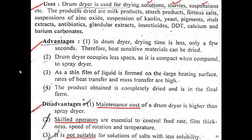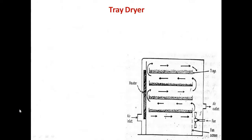Advantages of the drum dryer: time consumption is very less; it occupies very less space as it is compact; since a thin film of liquid is formed on a large heating surface, the rate of heat transfer is very high; and the product obtained is completely dry. Disadvantages: maintenance cost is very high; a skilled operator is required to monitor feed rate and film thickness; if feed rate or rotation speed is too high, a uniform film cannot be obtained; it is not suitable for solutions of salts with low solubility.